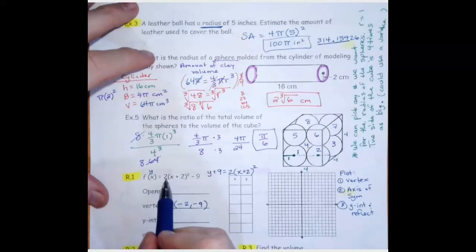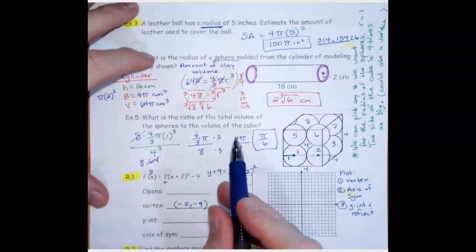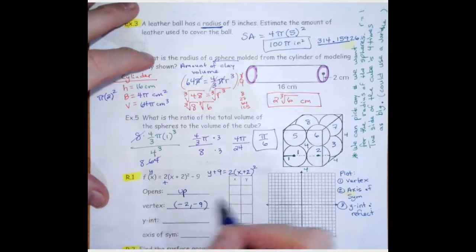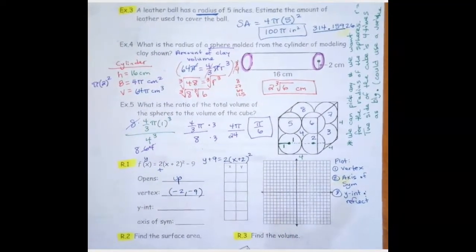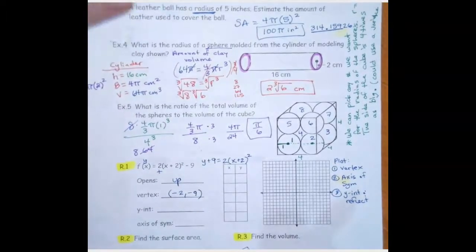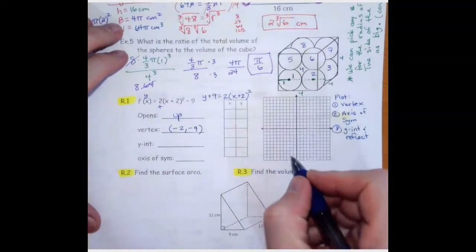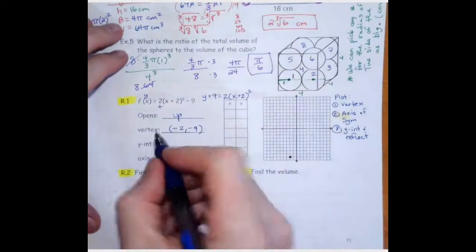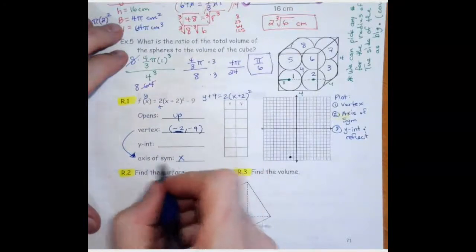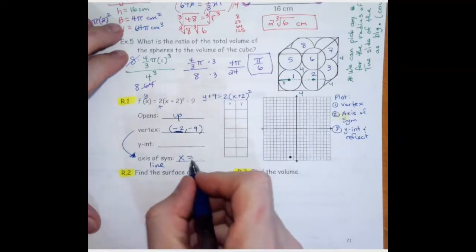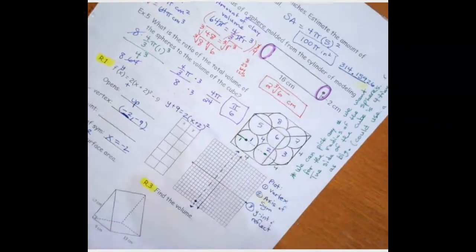We look at the a value — what's being multiplied by x squared — and that's positive. Just like a positive slope means it goes up, a positive a value means the parabola opens up. The vertex is at (−2, −9), so that's down here. From that point, we go to the axis of symmetry, which is the line x = −2. It's drawn as a dotted line because it helps us draw the graph.